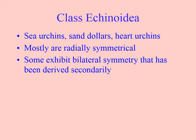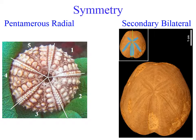Having a madriporite means they have a water vascular system and tube feet. Mostly they are radially symmetrical, showing pentamerous radial symmetry like we saw with the starfish. Some have bilateral symmetry, but it's secondary — they've evolved from pentamerous radial symmetry into a directional movement giving them bilateral symmetry. You can see the pentamerous radial symmetry of a regular urchin test just like a starfish.